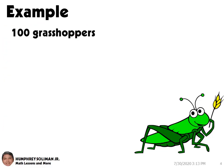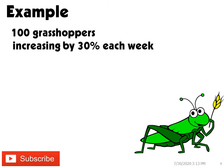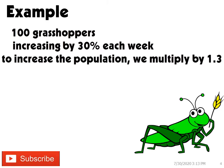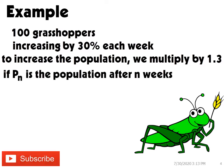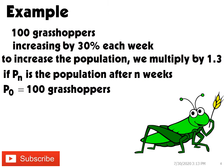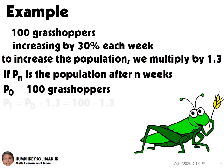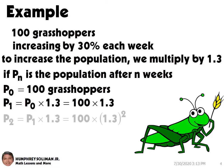Let's look at a population of 100 grasshoppers which under favorable conditions is increasing by 30% each week. To increase a quantity by 30%, we multiply by 1.3. If Pn is the population after n number of weeks, then P0 equals 100 — this is the original or starting population. After one week, P1 equals P0 times 1.3, so 100 times 1.3. After two weeks, P2 equals P1 times 1.3, so 100 times 1.3 squared.